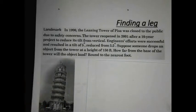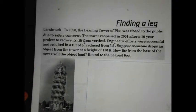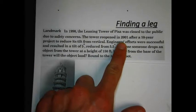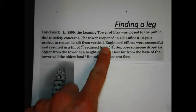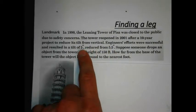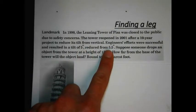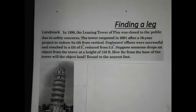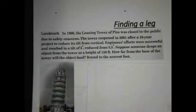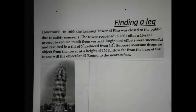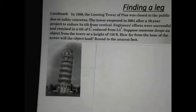We're going to use now these trigonometric ratios that we learned about in the previous video. Here's an example — a landmark question about the Leaning Tower of Pisa. It was closed to the public due to safety concerns. The tower reopened in 2001 after a 10-year project to reduce its tilt from vertical. Engineers' efforts were successful, resulting in a tilt of 5 degrees, reduced from 5.5 degrees. Suppose someone drops an object, like an egg, from the tower at a height of 150 feet. The question is: how far from the base of the tower will the object land? We're going to round to the nearest foot.